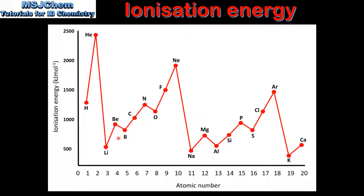However, if we look closely at the graph, we can see that the ionization energy actually decreases between beryllium and boron, nitrogen and oxygen, magnesium and aluminium, and phosphorus and sulfur. So next we will have a look at the reasons for these exceptions to the trend in ionization energy.